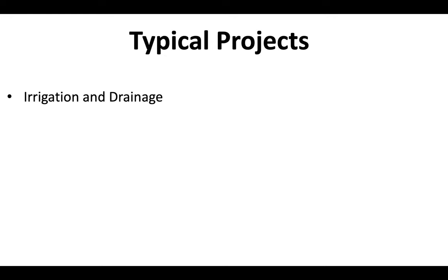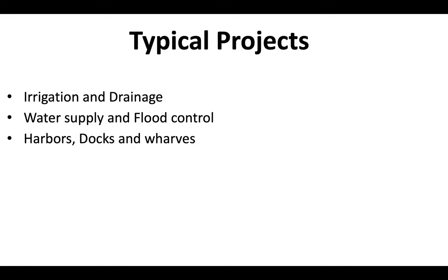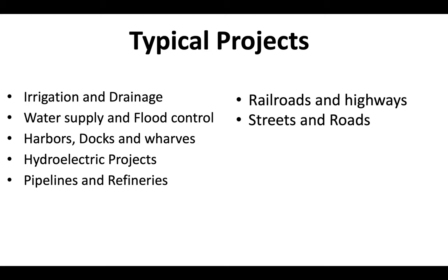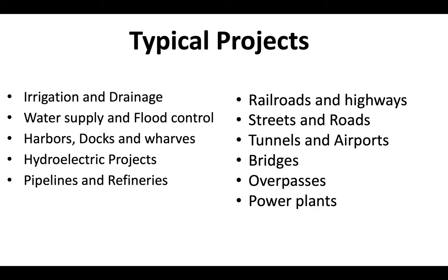The typical projects that fall under the General A Engineering Contractor License vary. They include irrigation and drainage, water supply and flood control, harbors, docks and wharves, hydroelectric projects, pipelines and refineries, railroads and highways, streets and roads, tunnels and airports, bridges, overpasses, and even power plants.